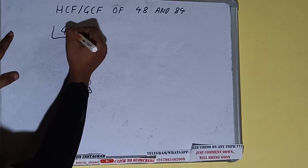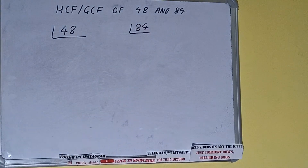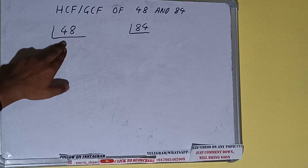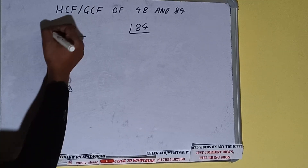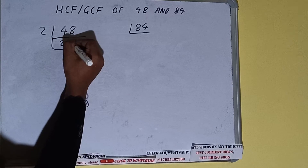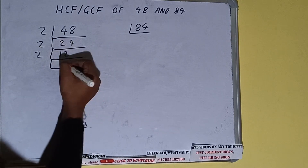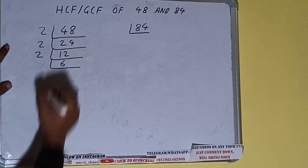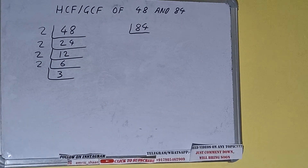First we'll do it for 48 and then we'll do it for 84. We'll check with the lowest prime number, that is 2 — is 48 divisible by 2? Yes it is, so divide it and we'll be having 24. 24 is again divisible by 2, giving us 12. 12 is divisible by 2, giving us 6. 6 is divisible by 2, giving us 3.